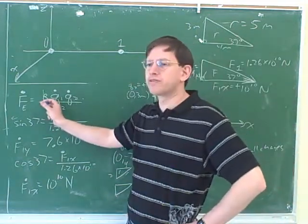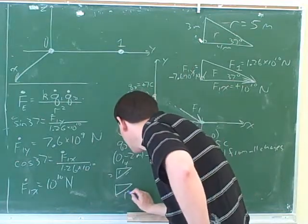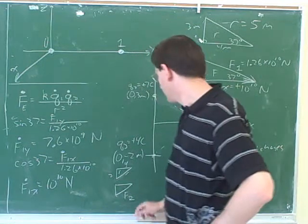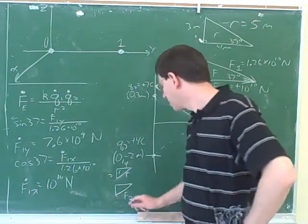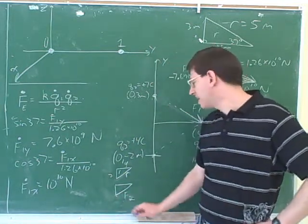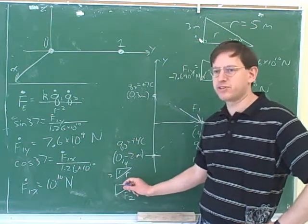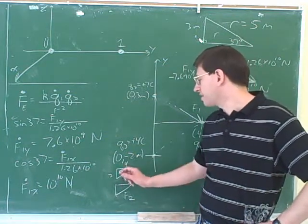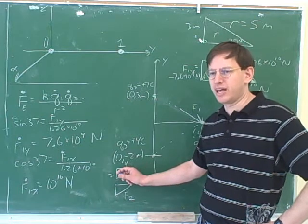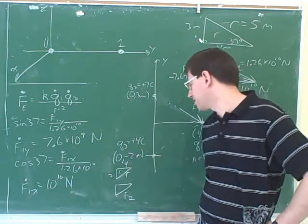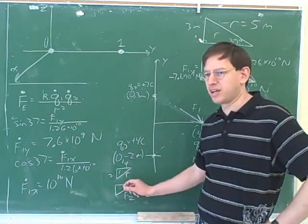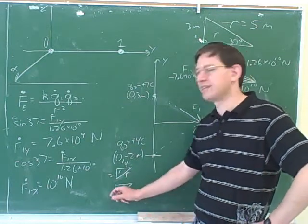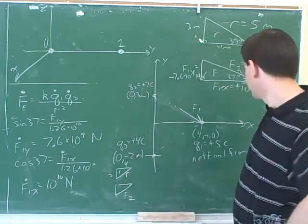Remember, this formula gives us the overall force. So whatever number we get out of the Coulomb's Law equation, we plug that in for the hypotenuse of the force triangle. Then we can figure out F2Y and F2X. We can find an angle in this triangle using inverse cosine or inverse tangent, then take that angle and break the force vector into its components. And we have to remember to put in the signs.